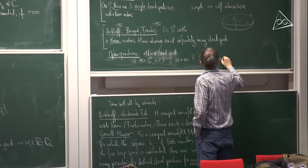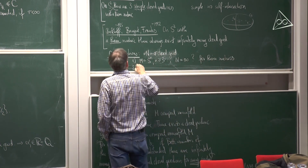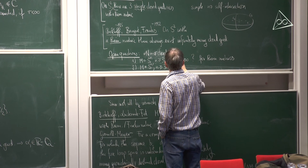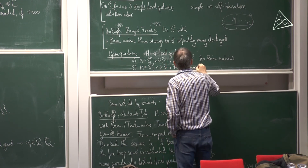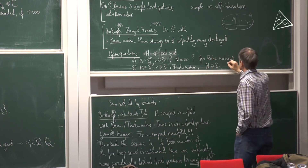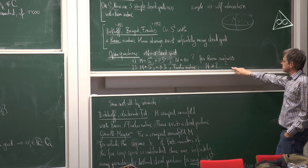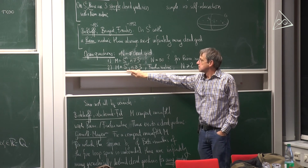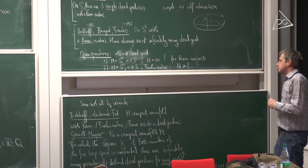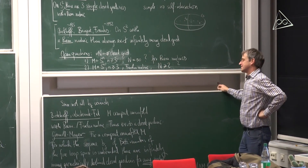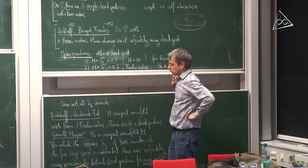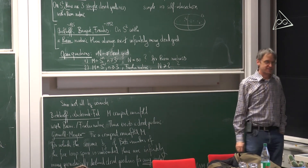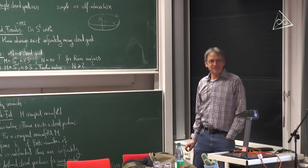The second question: if we take M equals S^n with a Finsler metric, is the number of closed geodesics always at least two? There are partial results - for bumpy metrics this is proven to be two, and there are also some results for n equals three. But it is not clear whether this is true in all dimensions. There are still certain questions to be solved. Thank you very much.